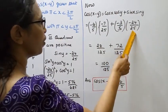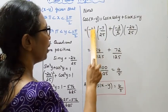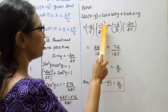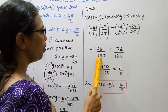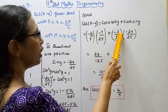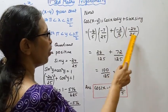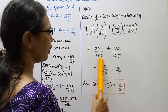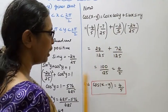Minus into minus is plus. So we get 28 by 125 plus 72 by 125. The denominator is same, 125. In the numerator 28 plus 72 equals 100.